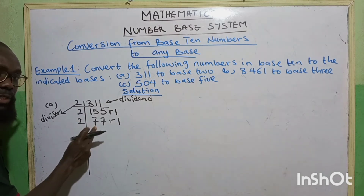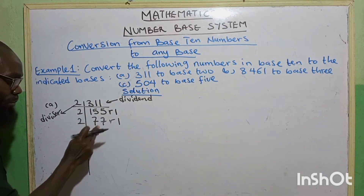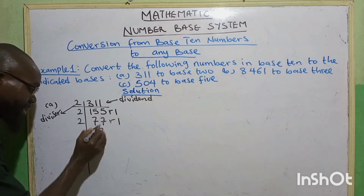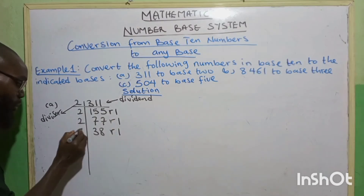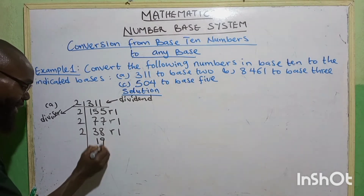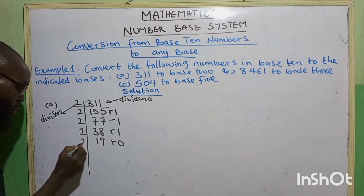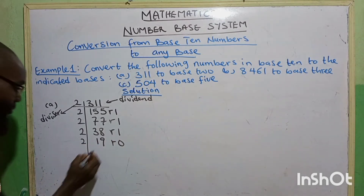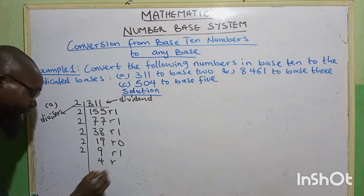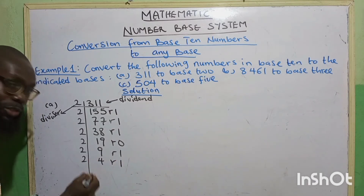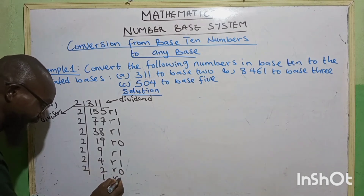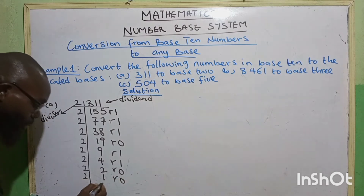Then 2 goes into 7, we have 3 — that is 6, remainder 1. Putting 1 in, making 17. 2 goes into 17, we have 8 — that is 16, remainder 1. 2 goes into 18, we have 9 — remainder 0. Then 2 goes into 19, we have 9 — that is 18, remainder 1. 2 goes into 9, we have 4 — remainder 1. Then 2 goes into 4, we have 2 — remainder 0. Then 2 goes into 2, we have 1 — remainder 0. Lastly, 2 goes into 1, we have 0 — remainder 1.